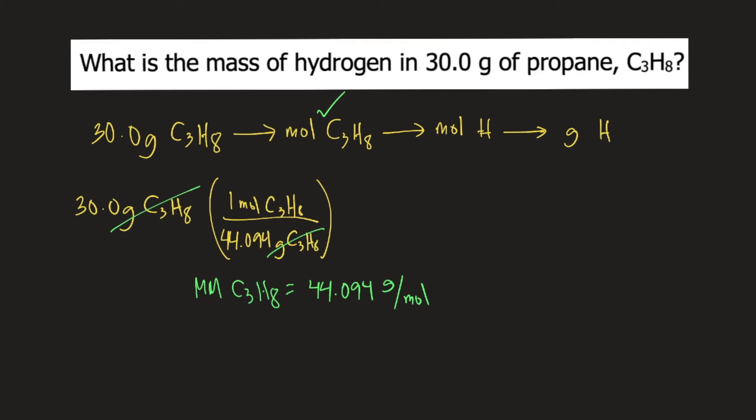Next is to convert moles of propane to moles of hydrogen. We know that the chemical formula of propane is C3H8. One mole of propane contains 3 moles of carbon and 8 moles of hydrogen. So 1 mole of propane contains 8 moles of hydrogen. So moles of propane will cancel. Now you have moles of hydrogen.